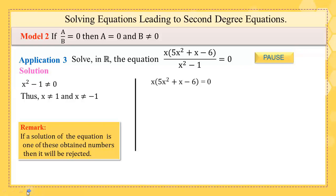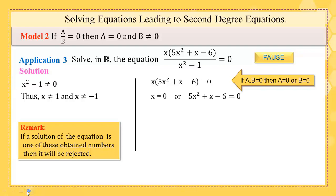Now let us go to the numerator: x(5x² + x - 6) = 0. We have two factors equal to zero, so x = 0 or 5x² + x - 6 = 0. Clearly x = 0 is the first root. For 5x² + x - 6 = 0, ask if a + b + c = 0: here a = 5, b = 1, c = -6, so 5 + 1 - 6 = 0. Thanks to that, we can find the roots directly without finding delta.